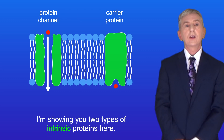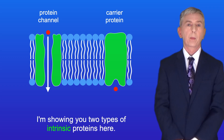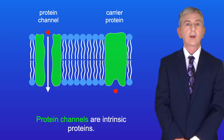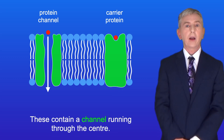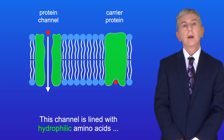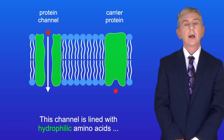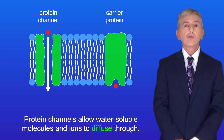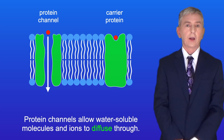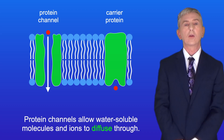I'm showing you two types of intrinsic proteins here. Protein channels are intrinsic proteins and these contain a channel running through the centre. This channel is lined with hydrophilic amino acids and is filled with water molecules. Protein channels allow water-soluble molecules and ions to diffuse through.